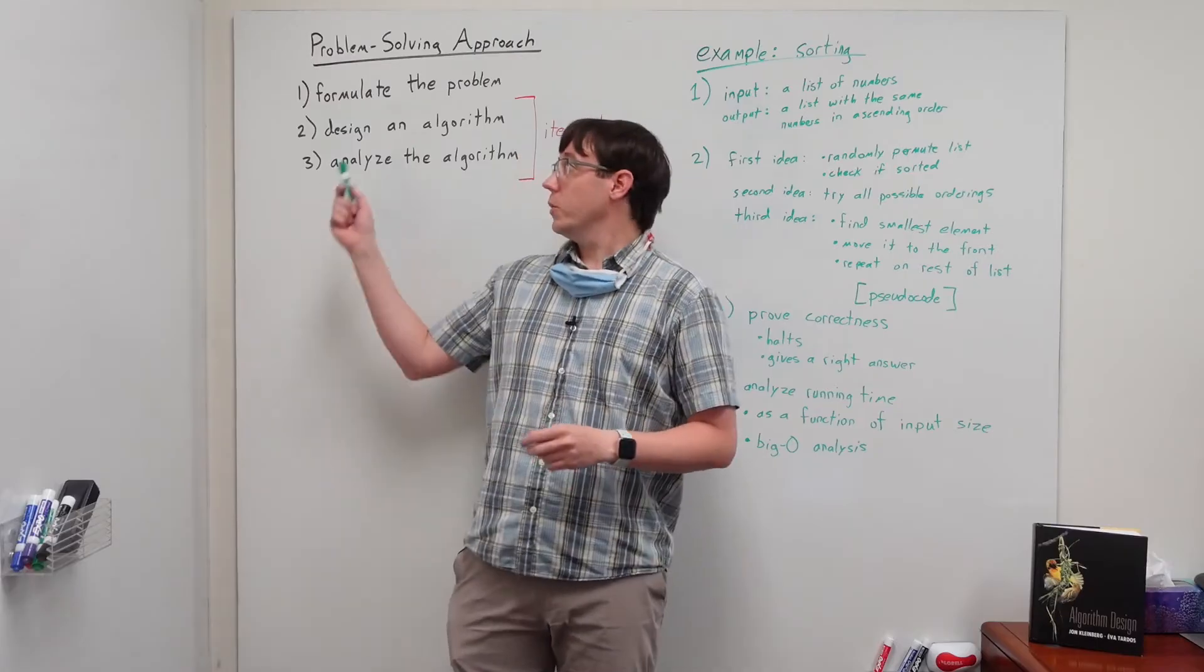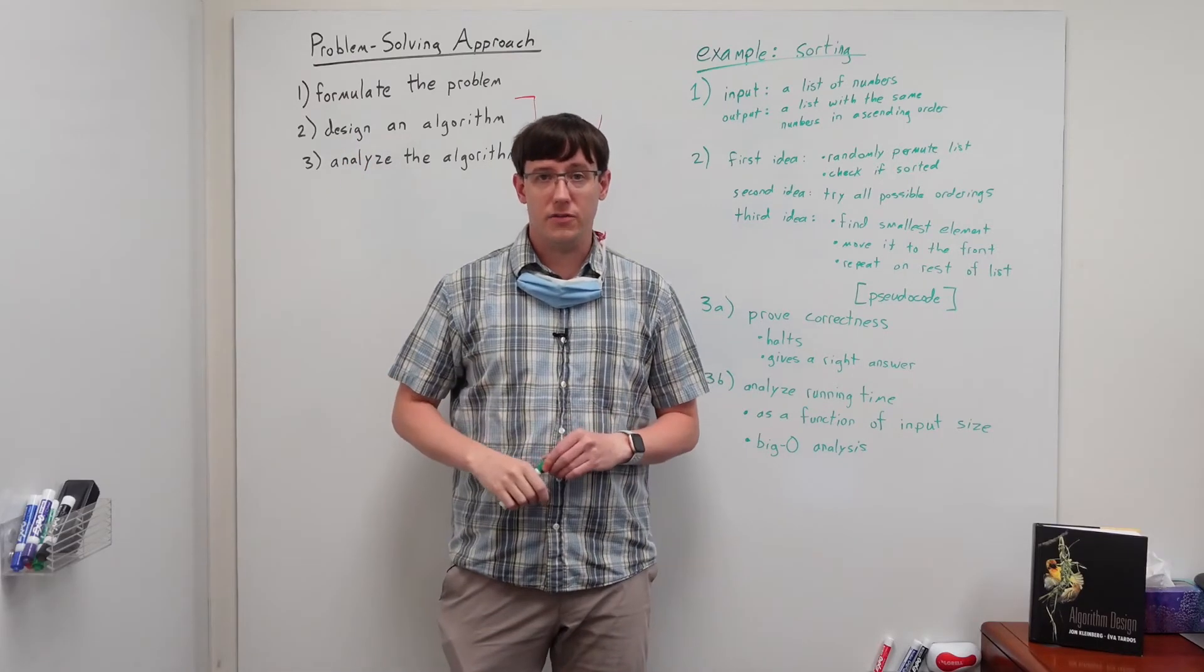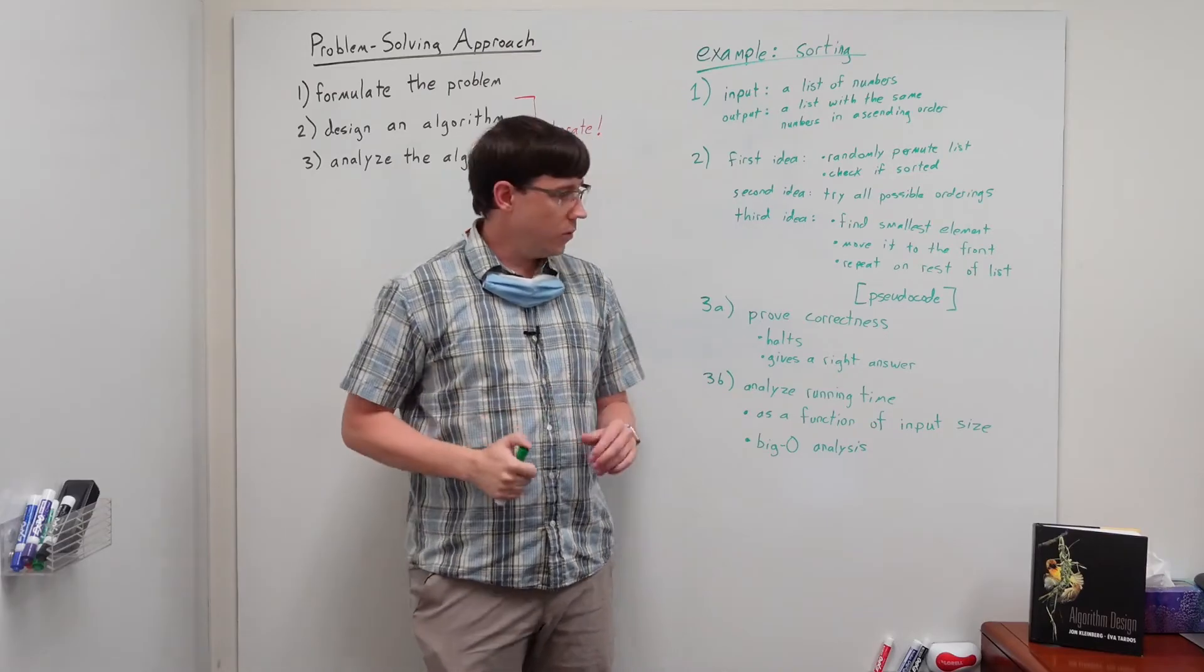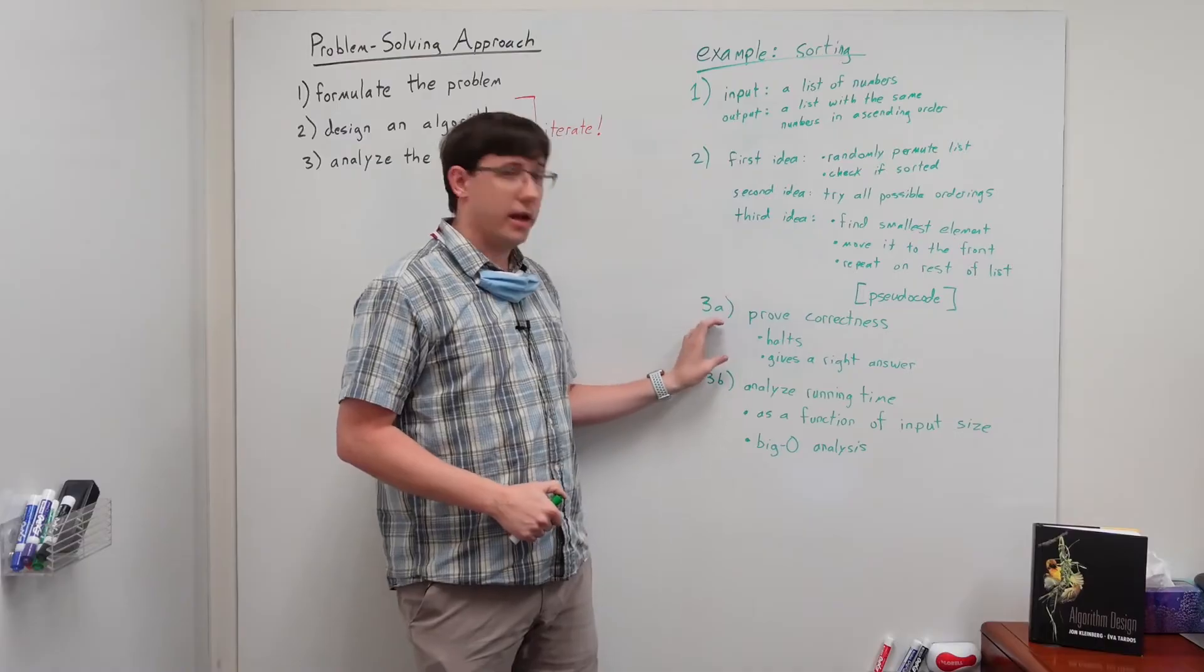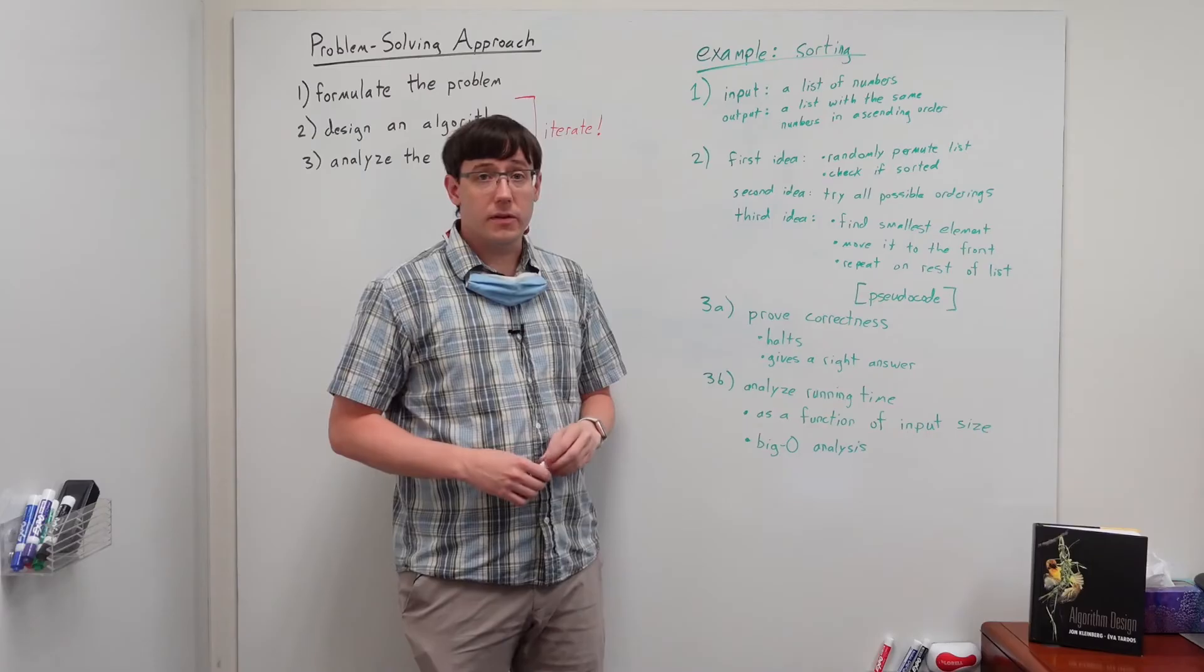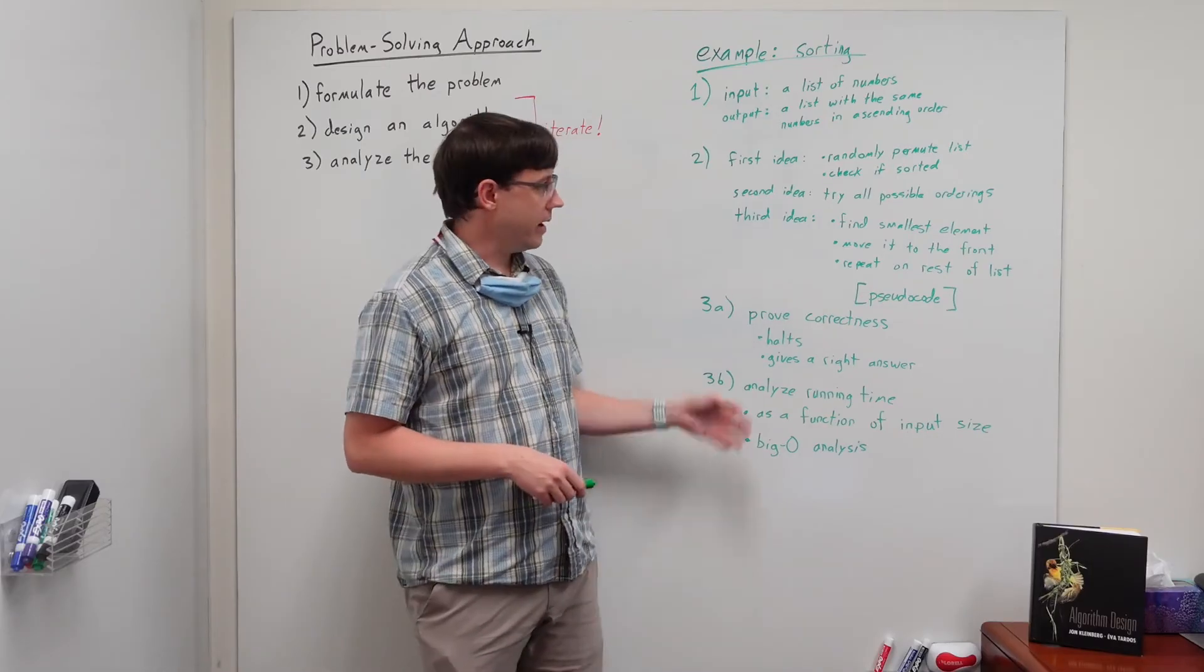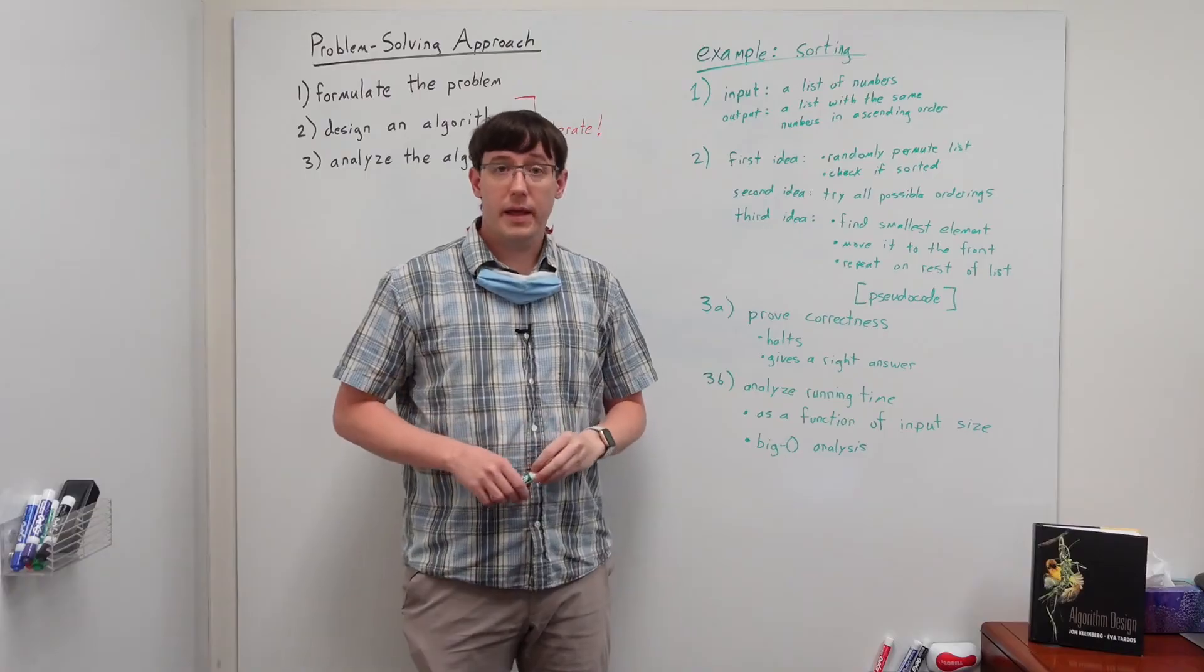But we also want to remember to iterate our steps of designing and analyzing the algorithm. So, even if we have written out our pseudocode and proved its correctness, we might do a runtime analysis and determine that our selection sort runs in n squared time, and think, is there some other sorting algorithm we could write that would be even more efficient?